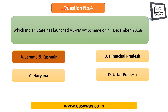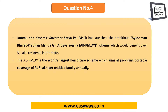The next question: which Indian state launched the Ayushman Bharat Pradhan Mantri Jan Arogya Yojana scheme on 4th December 2018? The answer is Jammu and Kashmir. The governor of Jammu and Kashmir, Satyapal Malik, launched this scheme. It is a healthcare scheme wherein each family is provided with rupees 5 lakh coverage. When implemented in Jammu and Kashmir, it would benefit over 31 lakh residents. The governor's name — Satyapal Malik — can also be a probable question.